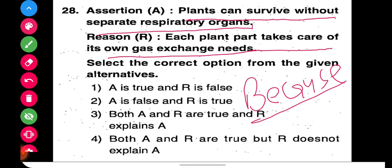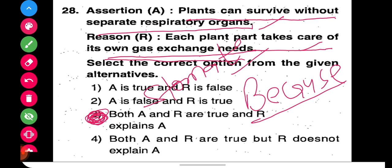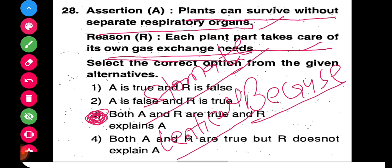Plants can survive without separate respiratory organs because each plant part takes care of its own gas exchange need. The second important thing is lenticels — lenticels are not a type of cell; these are pores found on the stem of the plant. So the right option is option number three.